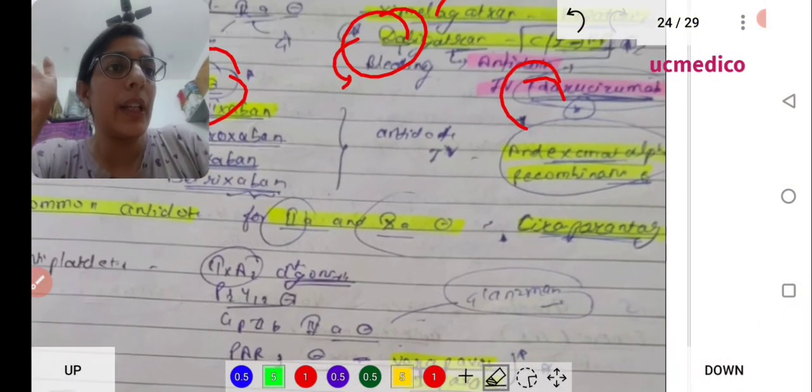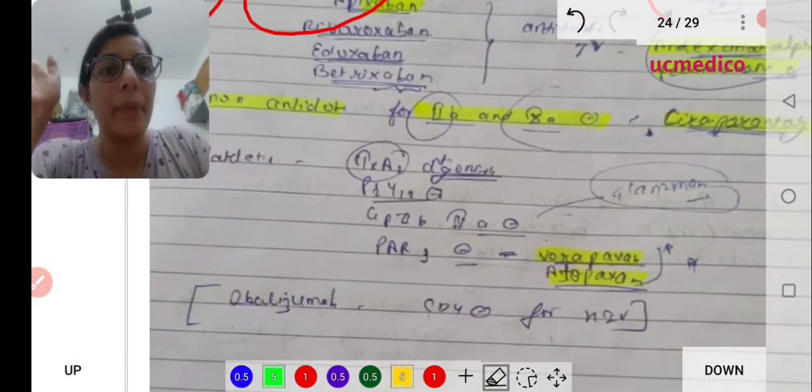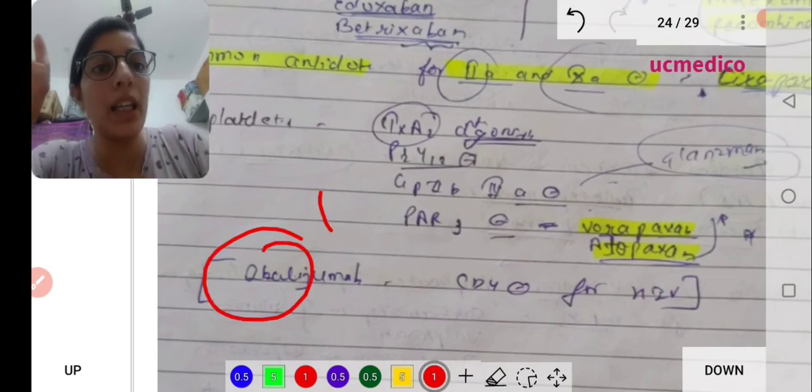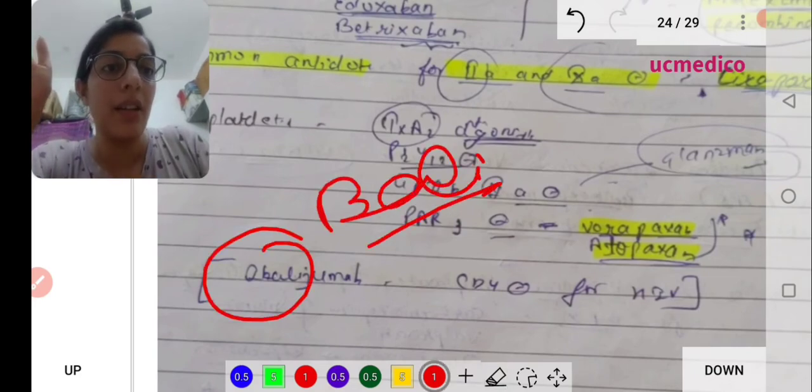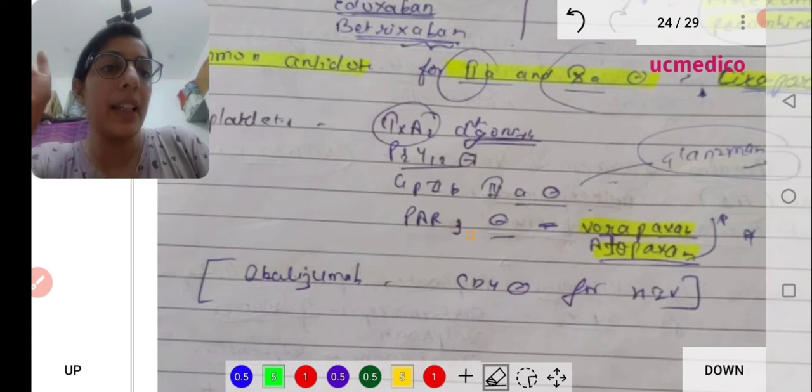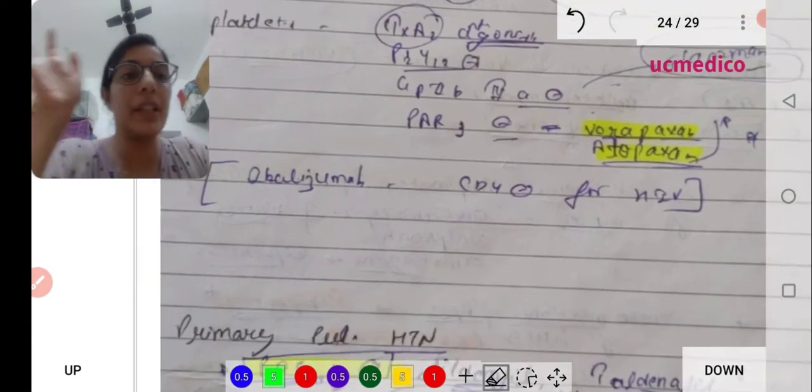Here you can see idarucizumab. Ibalizumab - this is for antiviral drug and it inhibits CD4.